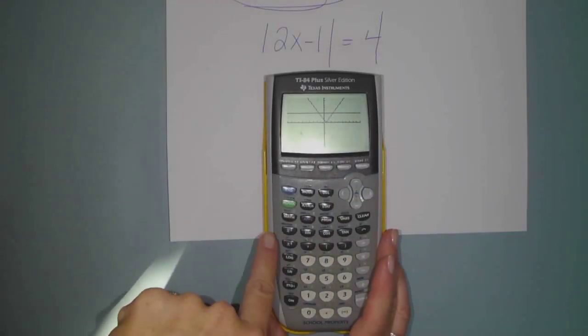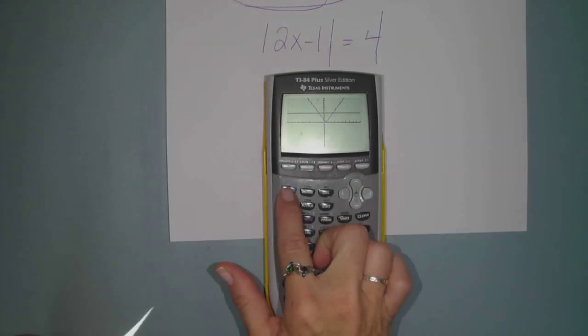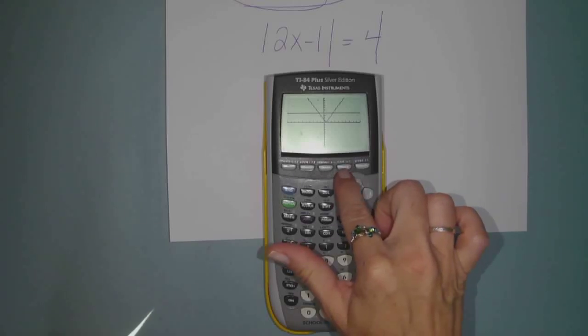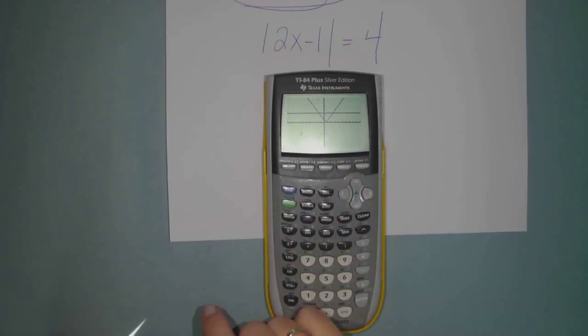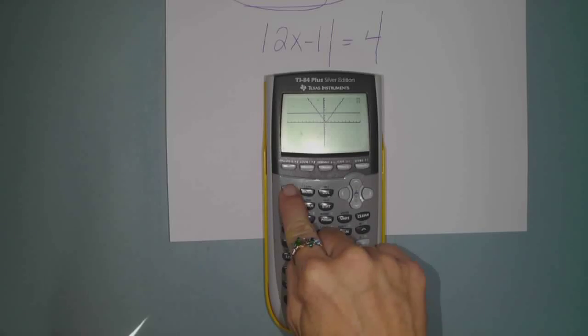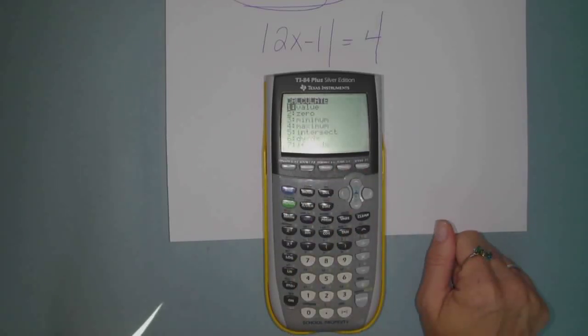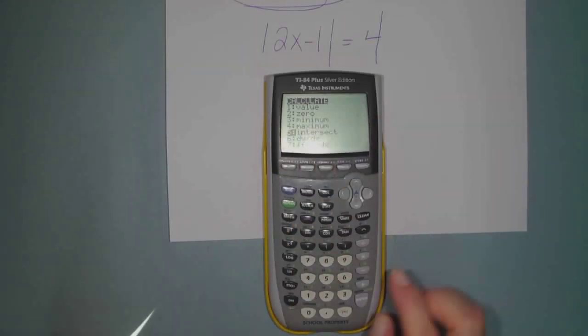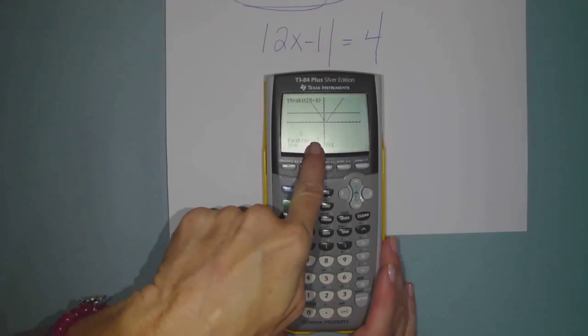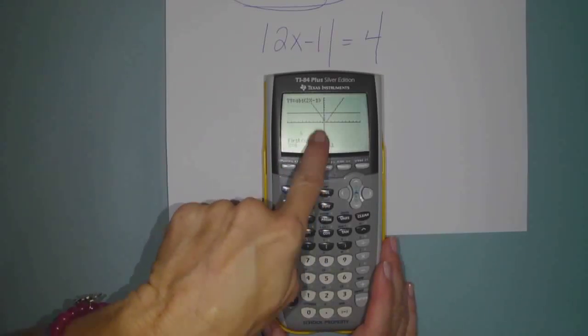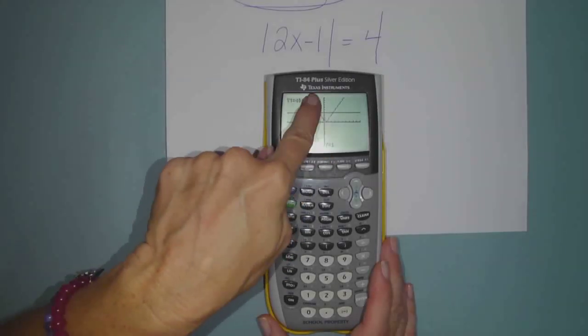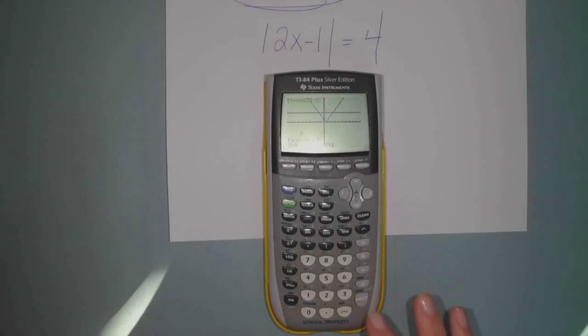you're going to press second. That's your blue button. Second. And then we want to calculate. Above the trace button, there's a blue word, calc. That stands for calculate. So we're going to press second, trace. And if you arrow down to number 5, it says where do they intersect? That's what we want. So press enter. And the question will prompt you here. It'll say first curve. Do you see how the cursor is blinking on your v shape? Well, that's your first curve. So you just say, yep, hit enter.